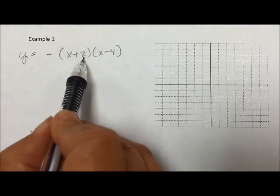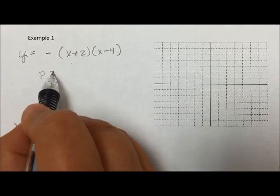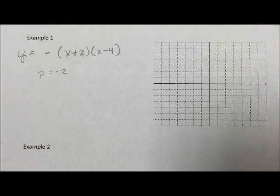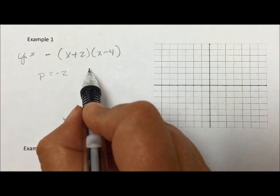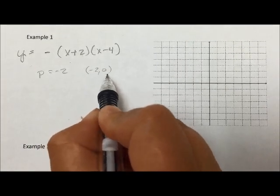So because this is positive 2, then that means that p equals negative 2. So that means that one of my zeros is at negative 2, 0.